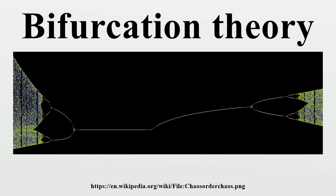A local bifurcation occurs when a parameter change causes the stability of an equilibrium to change. In continuous systems, this corresponds to the real part of an eigenvalue of an equilibrium passing through zero. In discrete systems, this corresponds to a fixed point having a Floquet multiplier with modulus equal to one. In both cases, the equilibrium is non-hyperbolic at the bifurcation point. The topological changes in the phase portrait of the system can be confined to arbitrarily small neighborhoods of the bifurcating fixed points by moving the bifurcation parameter close to the bifurcation point.